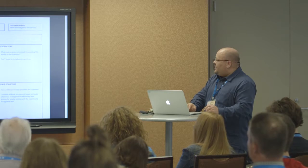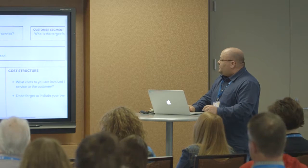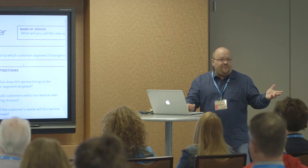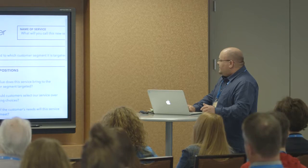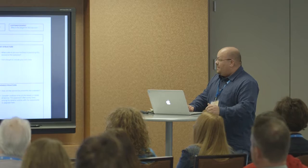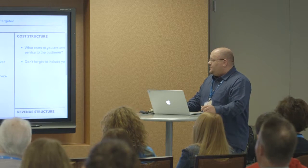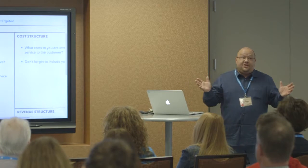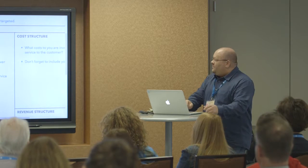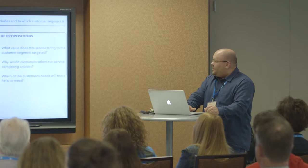The second worksheet is the Services Planner, based on a great tool called the Business Model Generator — it's a Creative Commons licensed tool that I've tweaked. You're going to take one of the lines from the brainstorming tool and answer: What are we going to call this new service? Who is the target for the service? A one-sentence description of what the service includes and to which customer segment it's targeted. Then drop into the middle column: the value propositions — what value does this service bring to the customer segment, why would customers select our service over competitors, and which of the customer's needs will this help meet?